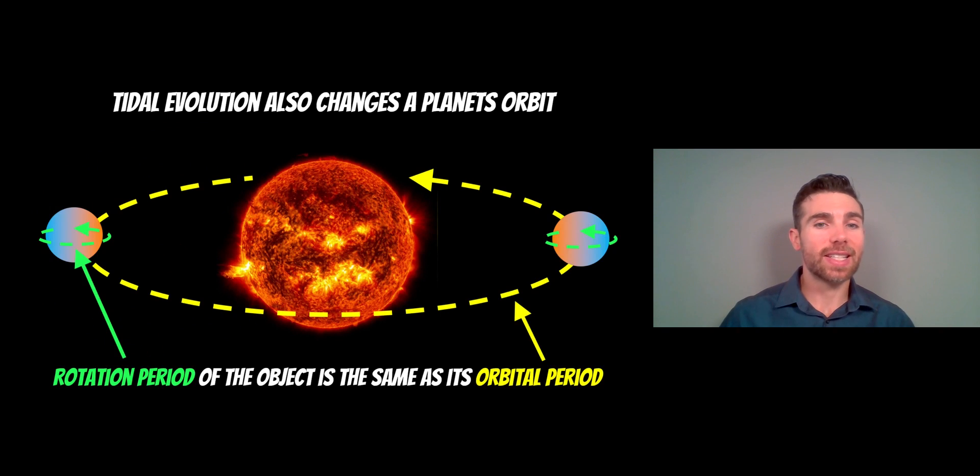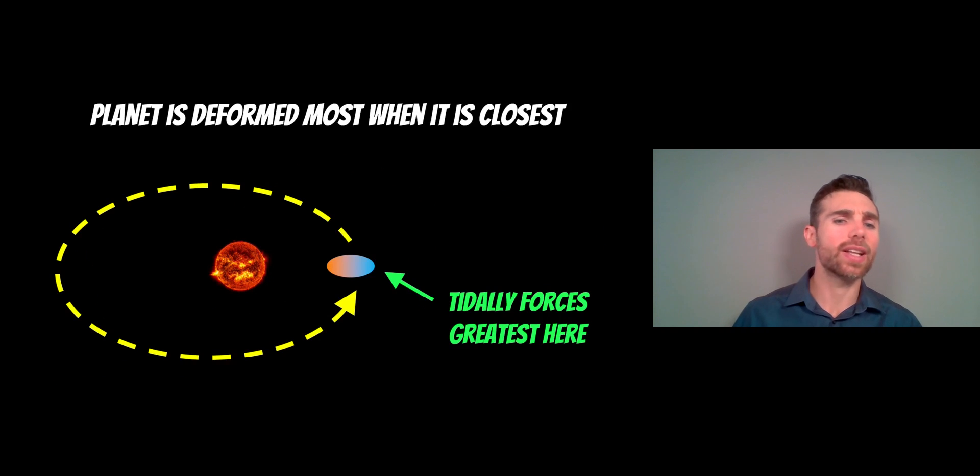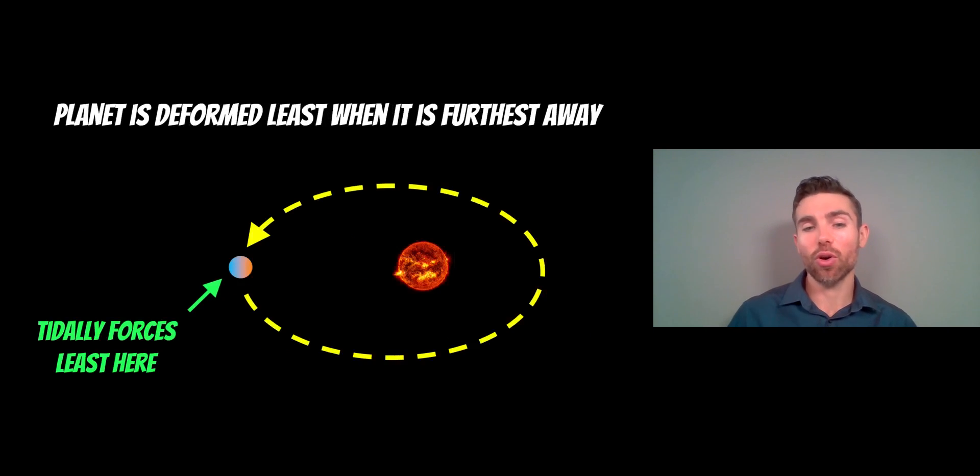There's also tidal evolution. So once that disk has dissipated and the disk is no longer there, then the planet's orbit and rotation can be changed due to tidal evolution. We know that the moon is tidally locked. It means that its rotation period is the same as its orbital period, so one face always faces the same way to us. And the same thing happens with planets. So you can get tidal locking. It also changes their orbit. So if you had an elliptical orbit, where a planet has a fairly elliptical orbit, it will be closer to the star in one part of its orbit and further away in another. And when it's closest, the tidal forces from that star are the greatest, which causes a larger deformation of the planet. So it basically stretches it at that point. When it's furthest away on that elliptical orbit, then the tidal forces are the least, so it kind of relaxes a little bit. So during one orbit, it gets pulled apart and then it relaxes again.